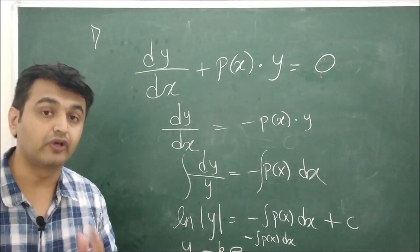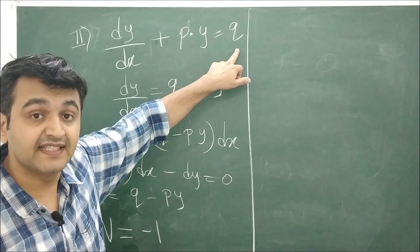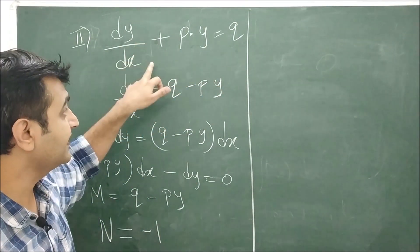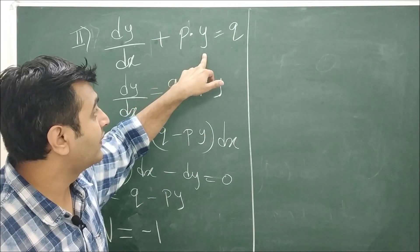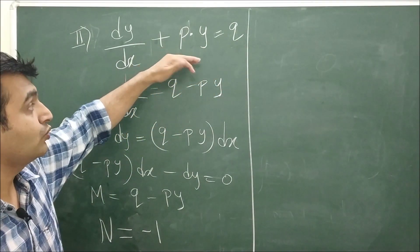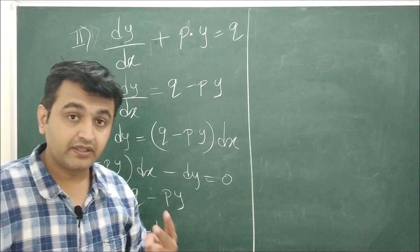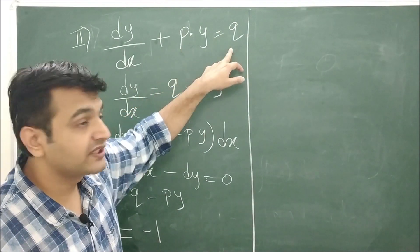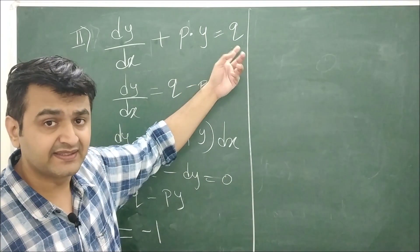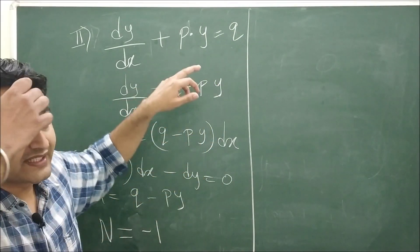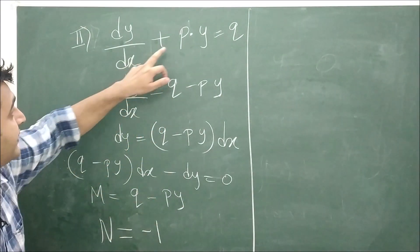When the right-hand side is non-zero, we have the non-homogeneous case. Variable separable fails because we cannot separate x and y. Reduction to variable separable also fails because P and Q can be anything — sine x, tan inverse of x — so degrees may not match. Exactness also fails for the general linear ODE.